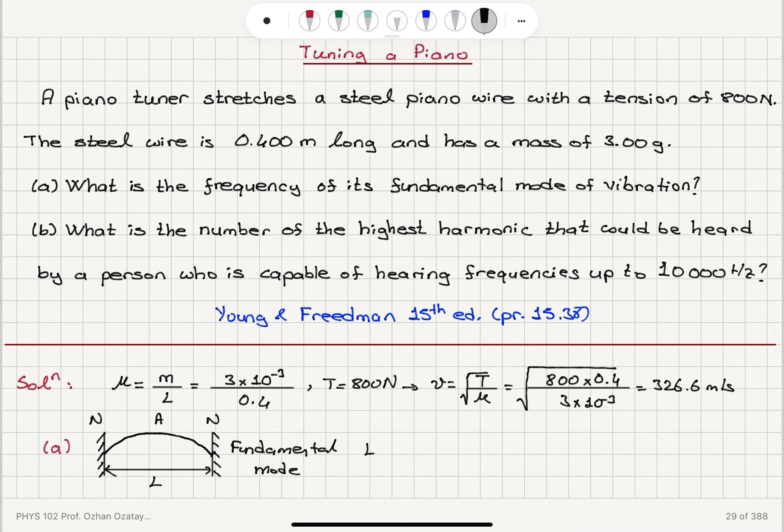So the length of the wire would be equal to the wavelength lambda 1, first harmonic, divided by 2. So the wavelength would be twice the length of the wire, which is 0.4 times 2, that is 0.8 meters.